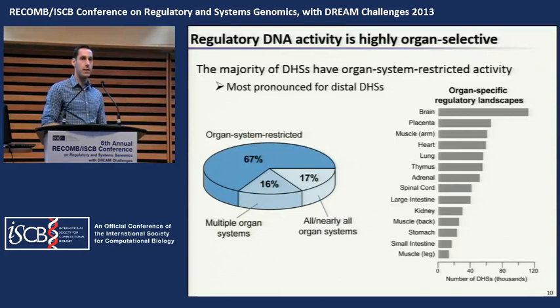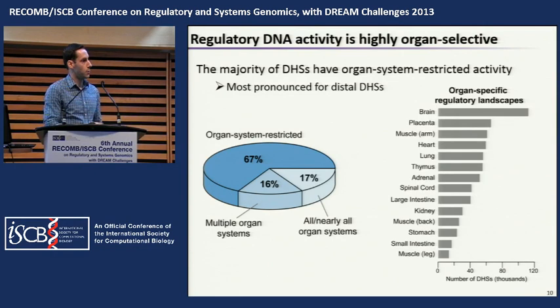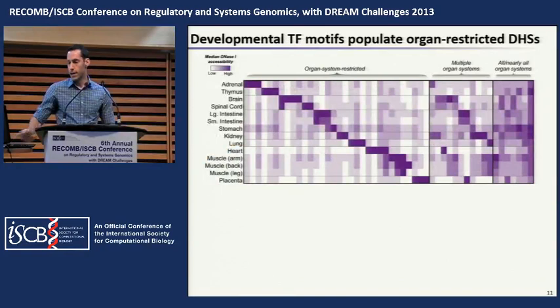Looking at the organ-specific landscape — DHSs active only in a single organ — we see a great deal more variability than in the total number of DHSs active per organ. The brain, a very complex tissue with many different cell types doing different things over time, has the largest number of organ-specific elements at 120,000. At the low end, leg muscle has just under 20,000 specific DHSs.